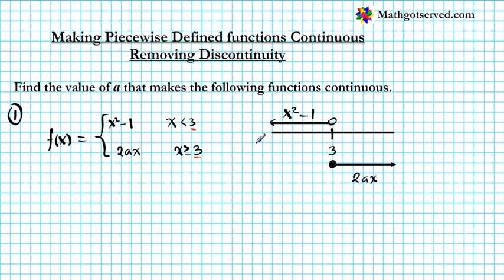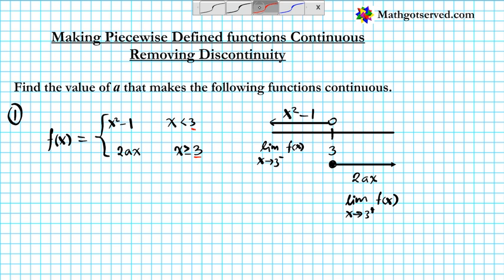So what value of a will help us do this? From the left side, we're looking at the limit as x approaches 3 from the left of f of x. And then the portion to the right gives us the limit as x approaches 3 from the right of f of x. All we do is plug 3 into the x values of these two functions and then solve for a — that will give us the answer.